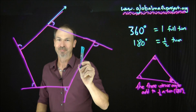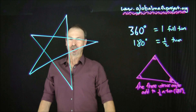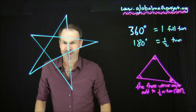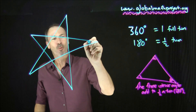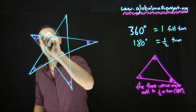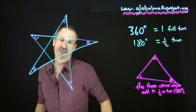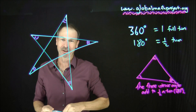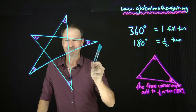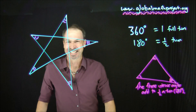I'll leave you with one puzzle. Here is a randomly drawn, very lopsided five-pointed star. Using the pencil, can you say something remarkable about the five angles at the points of the star? Draw a star, get out a pencil, give it a try. See you next lecture.